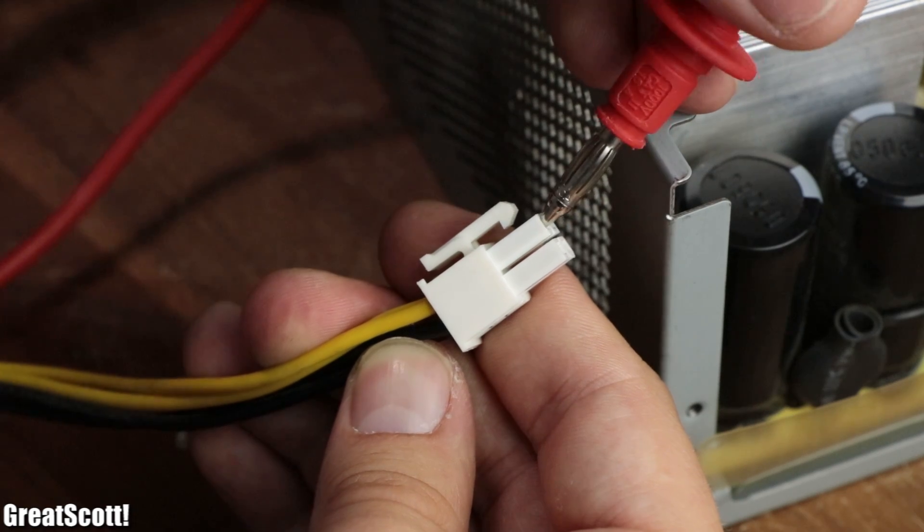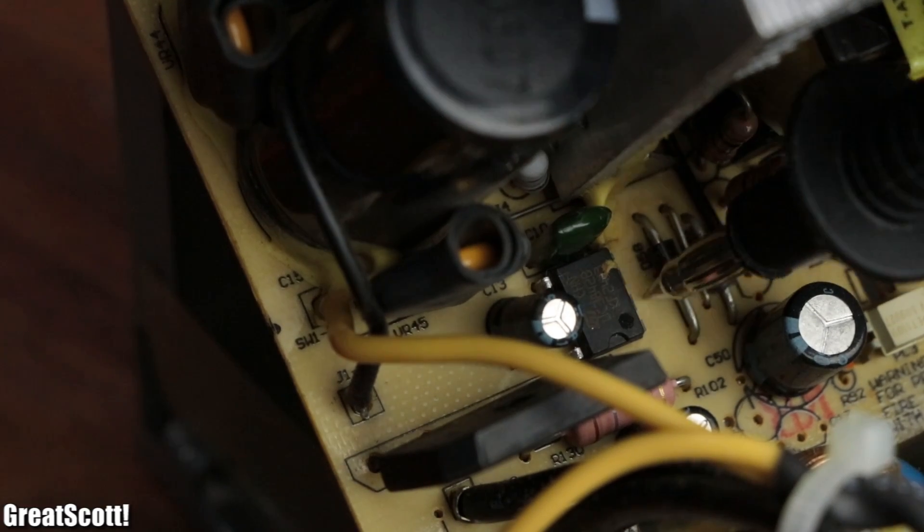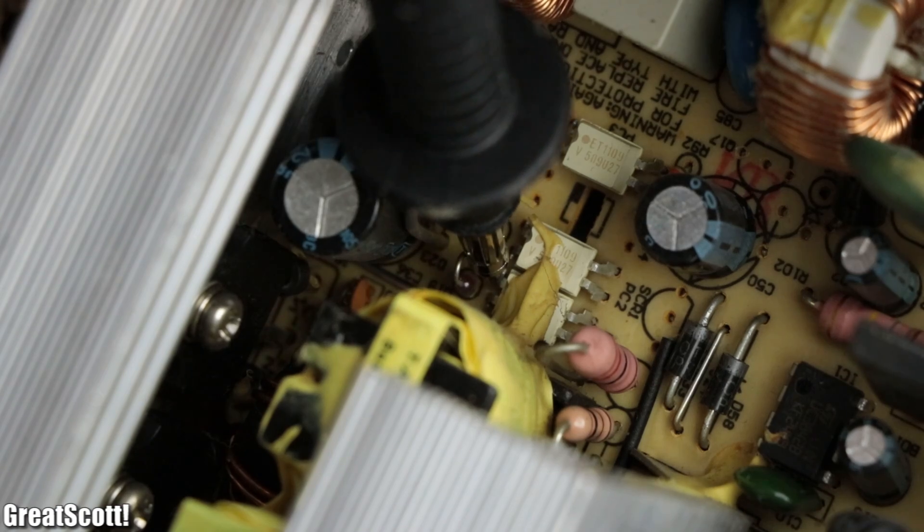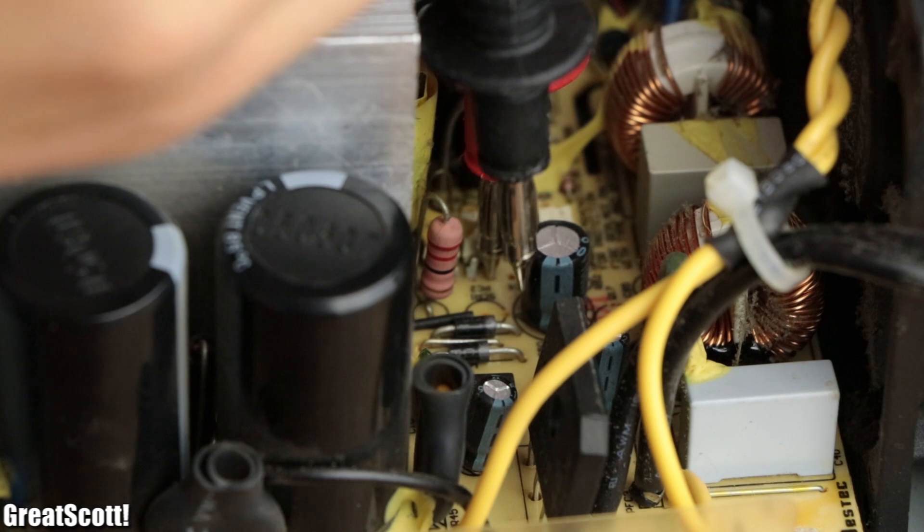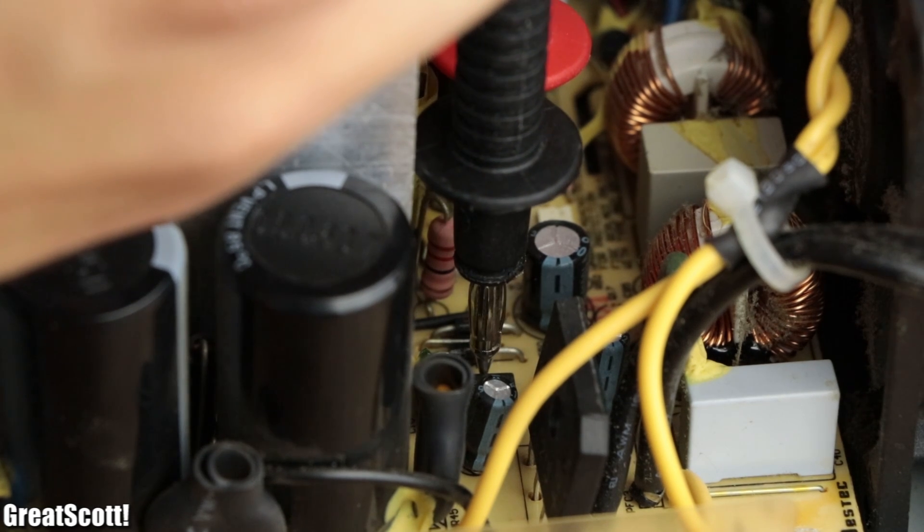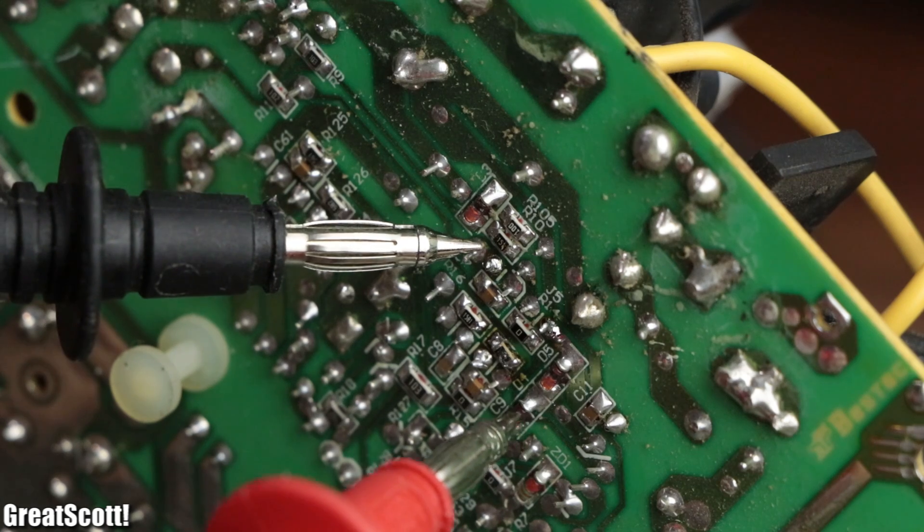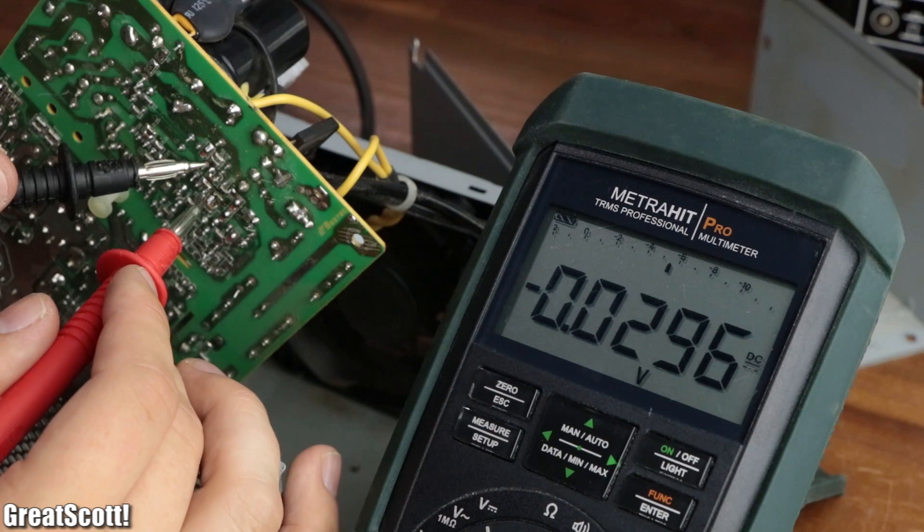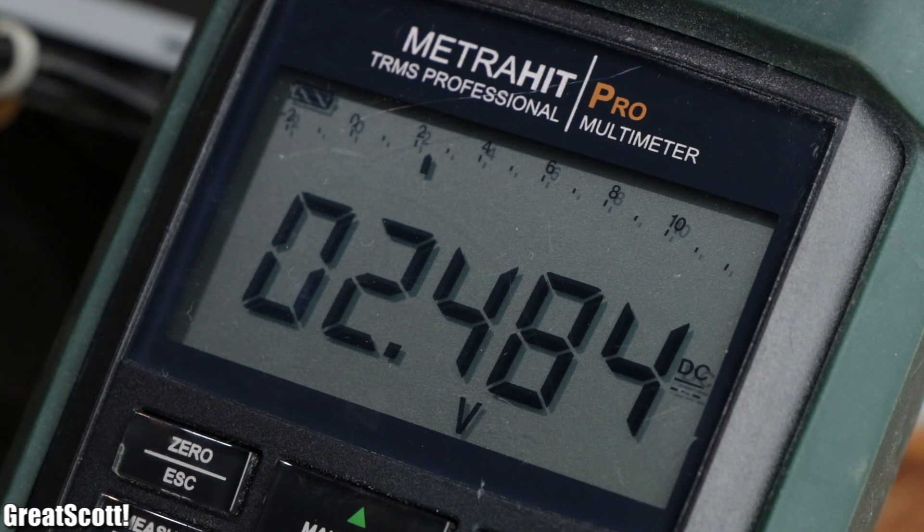Sadly though, there was no direct feedback connection between the 12 volt output and the pins of the IC. Instead, the 12 volt output was connected to an optocoupler, which on the other side connected to pin 2 of the IC, aka the voltage feedback pin. And while measuring the voltage of this pin, while the supply was powered on, I asserted a voltage of 2.5 volts.